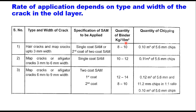The rate of application of binder and chips depends upon the type and width of the crack in the old layer. MRTH specification 2013 provides guidelines for quantity of binder and stone chips for different crack types and widths. For hair cracks and map cracks up to 3 mm width, a single coat of SAM or second coat of two-coat SAM can be laid with binder quantity of 8 to 10 kg per 10 m² and stone chips of 0.1 m³ of 5.6 mm size. For map cracks or alligator cracks of 3–6 mm and 6–9 mm width, two coats of SAM are suggested: first coat 12–14 kg per 10 m² and second coat 8–10 kg per 10 m².